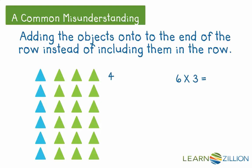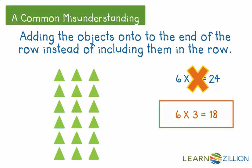Now we have 4 in each row. And when we use our repeated addition to find the total number of triangles, our answer comes out to 24, which we know is wrong. But when the objects are included in the row, then the array shows us the correct product.